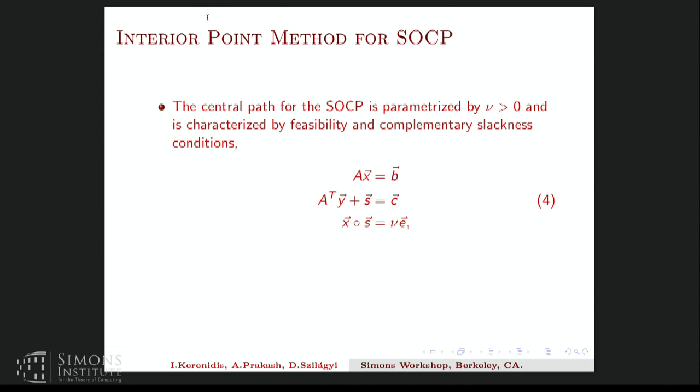So now I'll say something about the interior point method and how you analyze it in terms of these Jordan algebras. So the central path for the SOCP and also for SDPs and LPs is parameterized by feasibility and complementary slackness conditions. So the first two conditions are feasibility for the primal and dual problems. And the last condition is a version of the complementary slackness condition. So it can be written in terms of the Jordan product for the SOCP. If I was writing it for the SDPs, it would simply be X times S as matrix product is ν times identity. And the central path converges towards the optimal solution as ν tends to zero. So the complementary slackness conditions for optimality say that X dot S is zero.